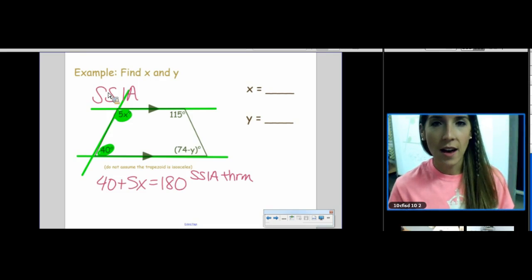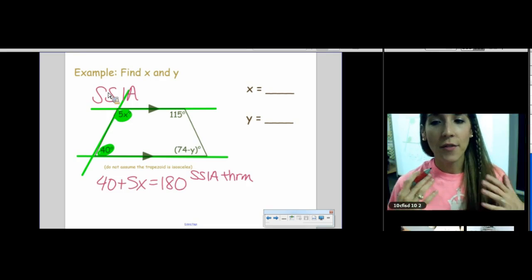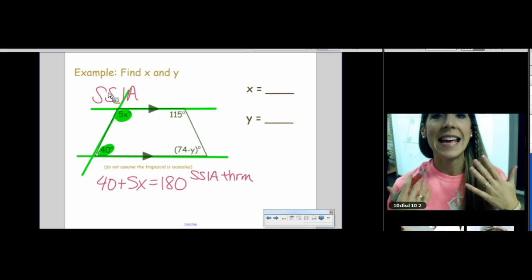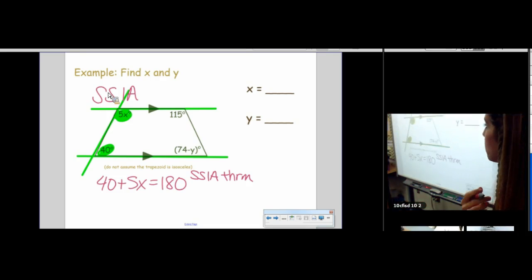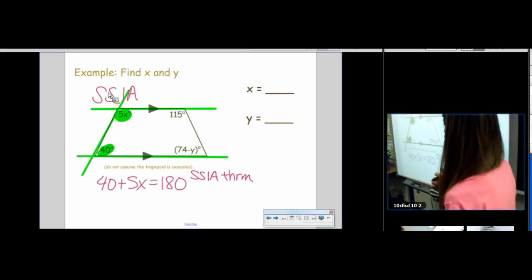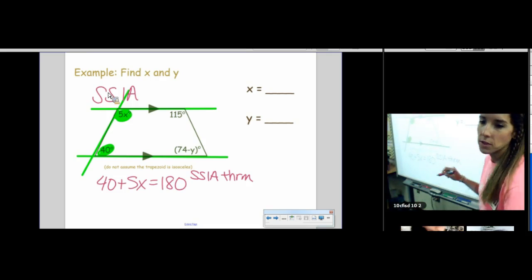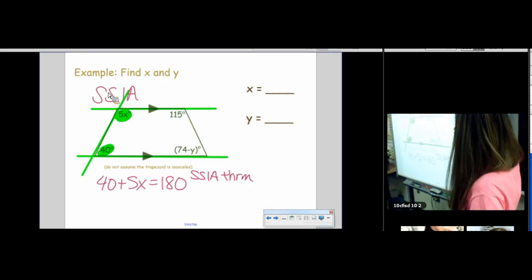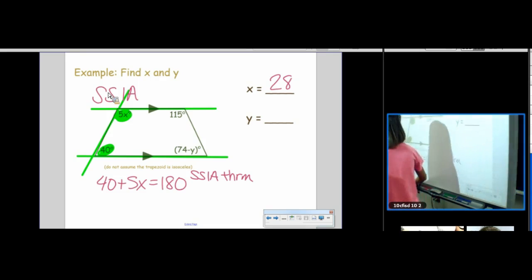Good. So, the vocab word is same side interior angles. So, I'm allowed to do 40 plus 5x equals 180 because the same side interior angle theorem says that if two lines are parallel, then same side interior angles are supplementary. So, it's kind of like it's a conjecture with a hypothesis and a conclusion. If two lines are parallel, then same side interior angles are supplementary. All of these are hypothesis conclusion. They're conjectures. Okay. So, final answer. X is? Type it in. 28. Beautiful. Actually, it's not a degree measure. It's just a variable.